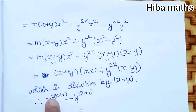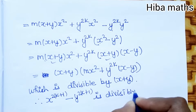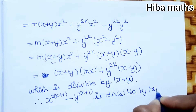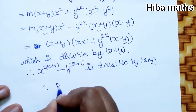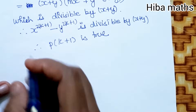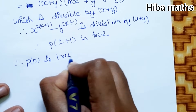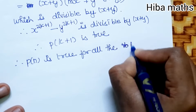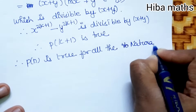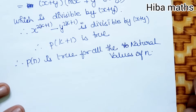Therefore, x^(2k+1) - y^(2k+1) is divisible by x+y. Therefore P(k+1) is true. Therefore P(n) is true for all natural values of n. If you have any doubts, leave them in the comment section. Thank you so much for watching.